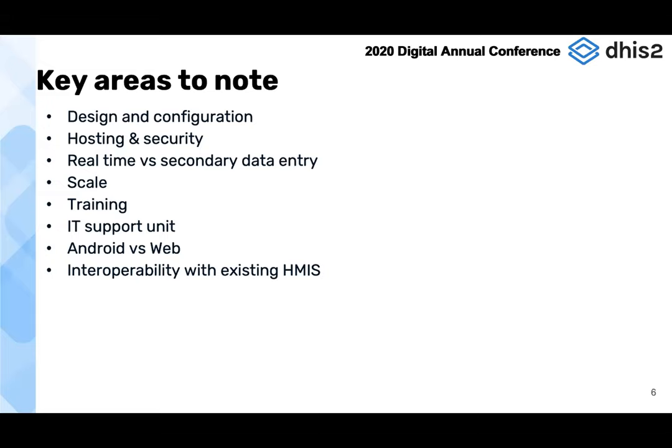In configuring the tracker, we looked at these broad areas: design, configuration, hosting and security, real-time versus secondary data, scale, training, IT support, Android versus web, and interoperability with existing HMIs. We have built a local team over the years to provide support for all our DHIS2 instances, and the same team was tasked to manage the tracker. Our deployment uses both the web and Android — in areas where connectivity is a challenge, we use the Android, and where connectivity is good, we use the web.